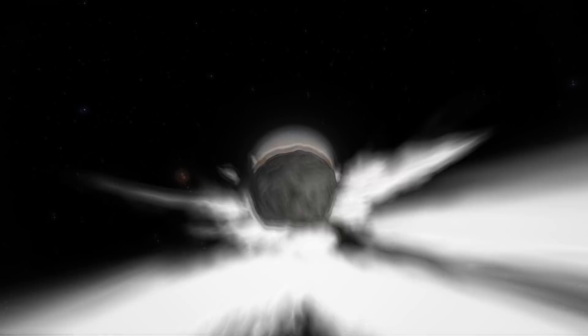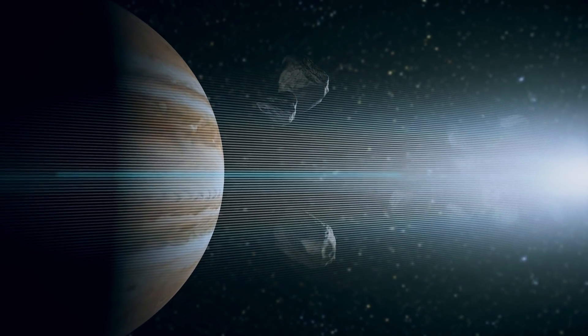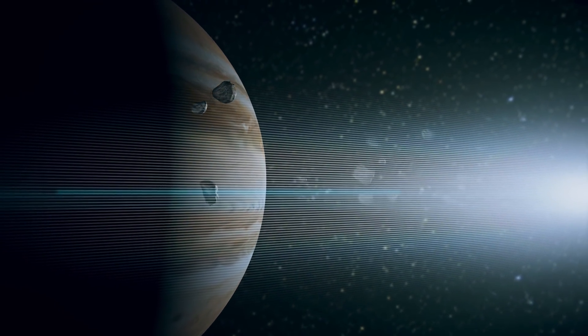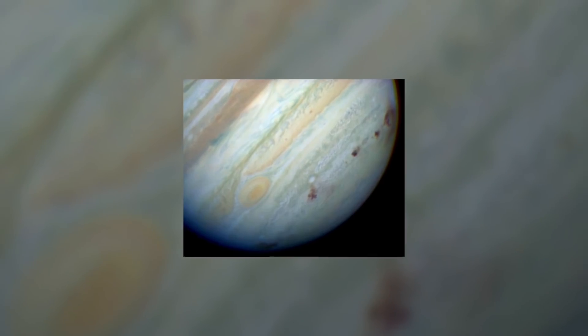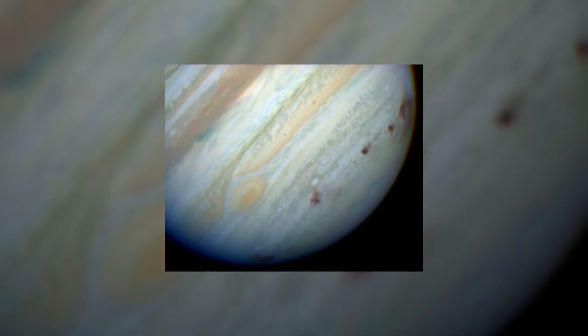And this wasn't the first time Jupiter encountered a comet. In 1992, it ripped comet Shoemaker-Levy to shreds with extreme violence. Two years later, all the fragments of this comet crashed into Jupiter, leaving huge, dark spots on its surface.